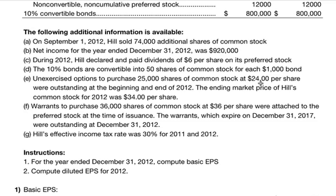Unexercised options to purchase 25,000 shares of common stock at $24 per share were outstanding at the beginning and end of 2012. The ending market price of Hill's common stock for 2012 was $34 per share. Warrants to purchase 36,000 shares of common stock at $36 per share were attached to the preferred stock at issuance; the warrants expire on December 31st, 2017 and were outstanding at December 31st, 2012. Hill's effective income tax rate was 30% for 2011 and 2012.